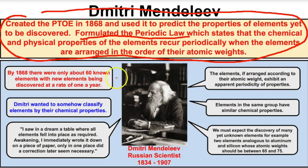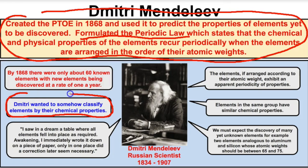Some important things regarding Dmitry Mendeleev: by 1868 there were only about 60 known elements, with new elements being discovered at a rate of about one a year. Today we know there are about 115 elements. So in 1868, when he developed his first periodic table, there were only about 60 known elements, and his purpose was to somehow classify elements by their chemical properties.